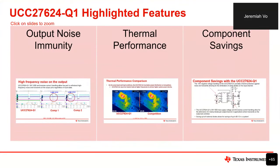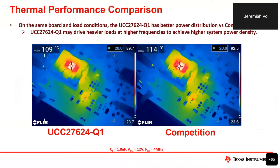Next, I want to talk about thermal performance. On the left we see the UCC 27624Q1, and on the right a competitor part, both under the same board and load conditions. Looking at the top left-hand corner of each picture, we can see the UCC 27624Q1 is a whole 5°C cooler than the competition. This allows us to drive heavier loads at higher frequencies, which is beneficial for achieving higher system power density.